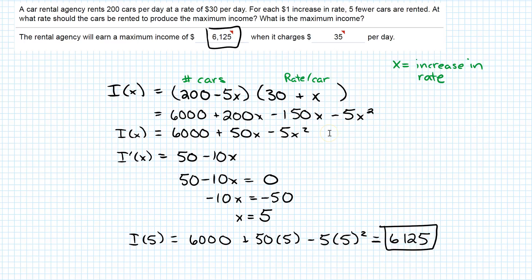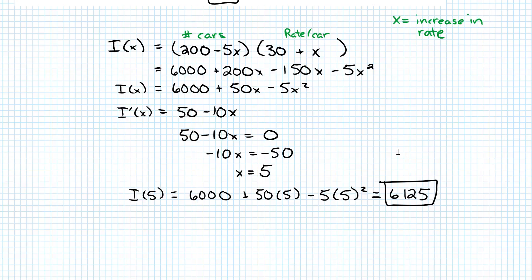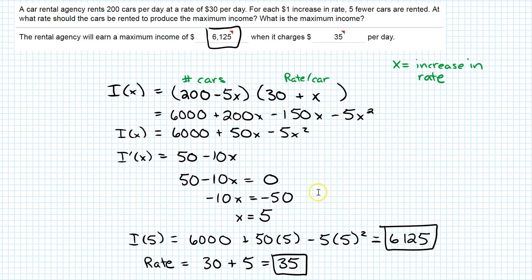Which is the answer they were looking for here. Now it's asking how much it's supposed to charge per day. One of the biggest mistakes I see is people say, oh, 5 was the increase, so it's going to be 5 per day. But that's not correct. The rate we're looking for is this 30 plus x. So the rate is 30 plus, well, x equals 5, so 30 plus 5, which is 35. That's the rate they should charge, $35 per day.